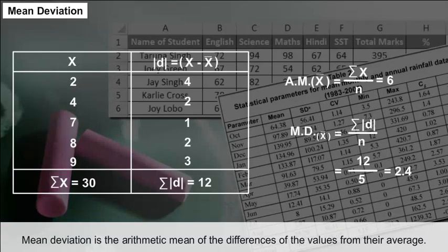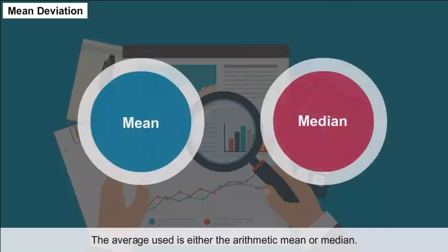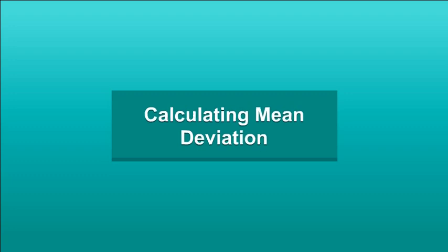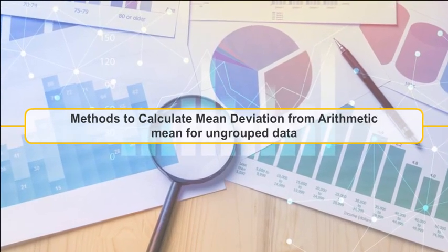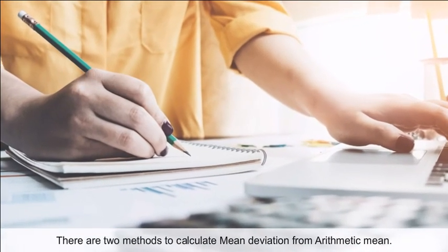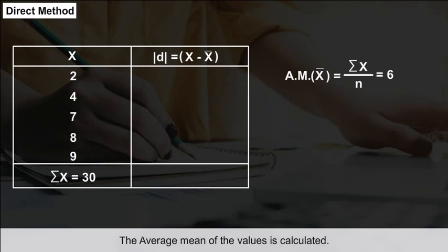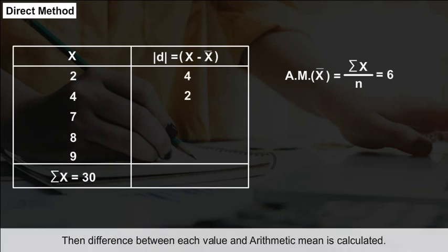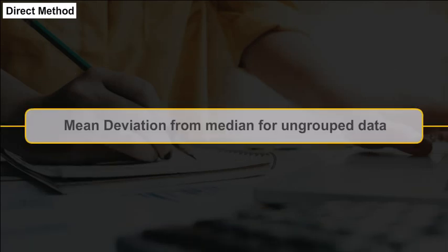Mean Deviation is the arithmetic mean of the differences of the values from their average. The average used is either the arithmetic mean or the median. There are two methods to calculate mean deviation from the arithmetic mean for ungrouped data: the direct method, where the arithmetic mean is calculated first, then the difference between each value and the mean is found, and the average of those differences is the mean deviation.